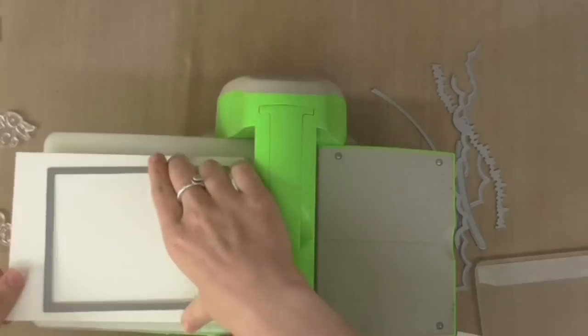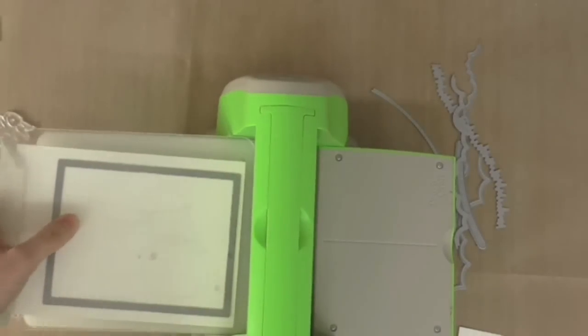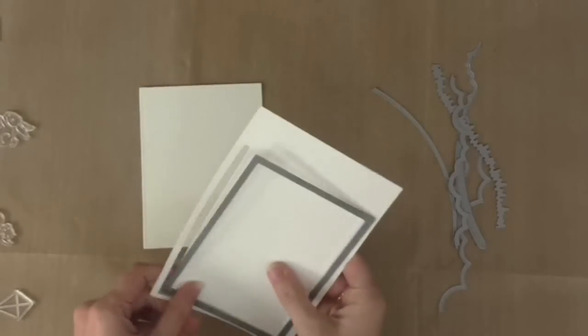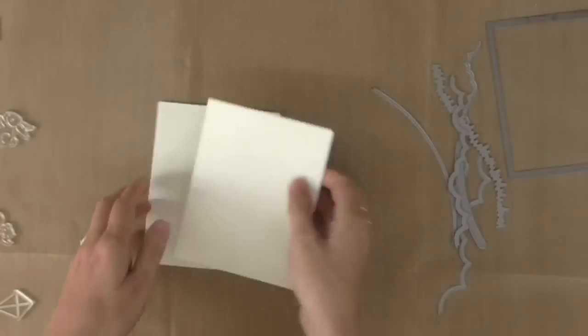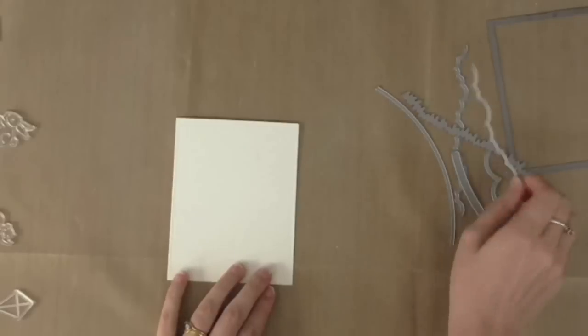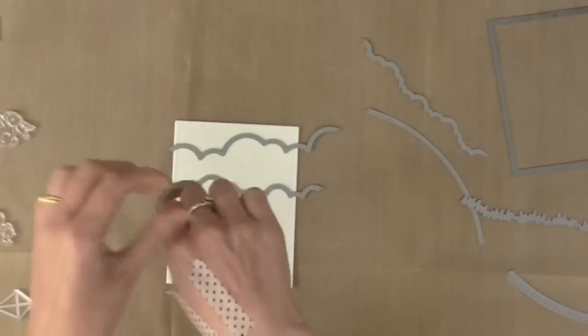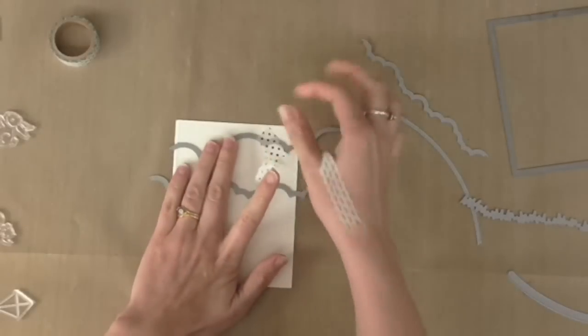To start off with this card I'm going to need two panels which are exactly the same size. I'm using this large stitch rectangles die also from Lawn Fawn. This is a total Lawn Fawn fest today by the way. I've cut these out of watercolor cardstock because it's sturdier and I'm going to use some of the puffy cloud border dies, two of these,